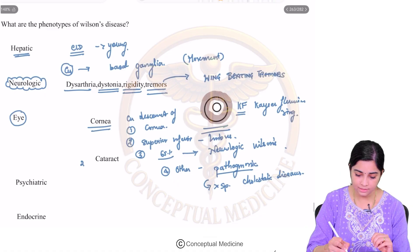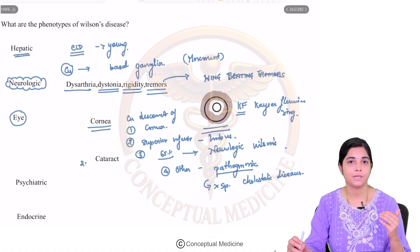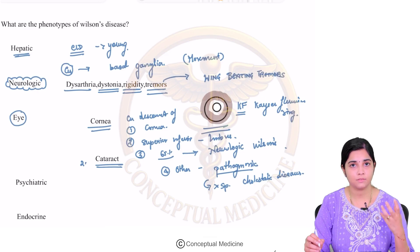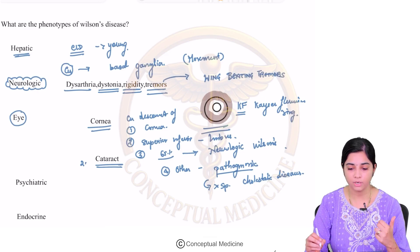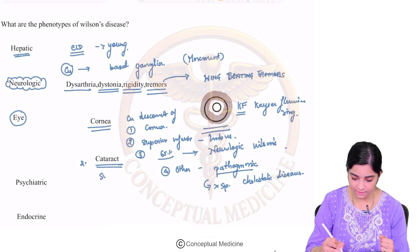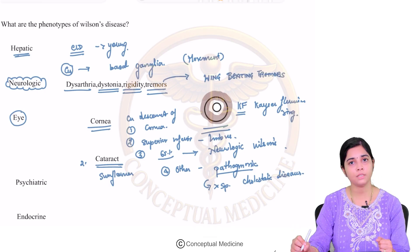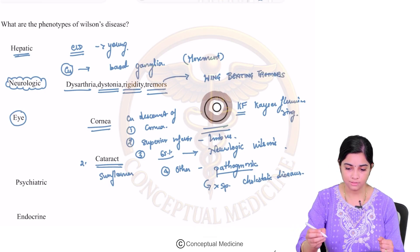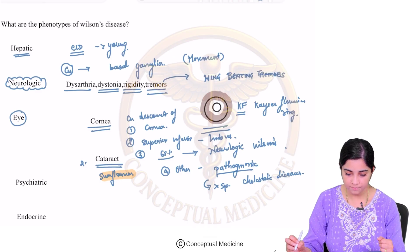The second clinically important eye manifestation is cataract, where there can be opacification of the lens. What type of cataract? It is called the sunflower cataract.